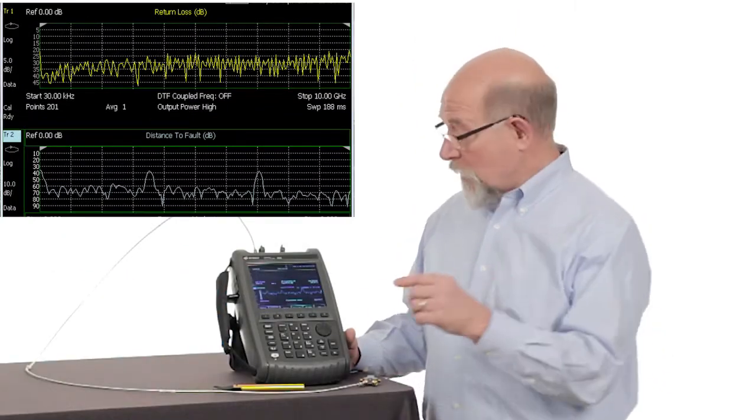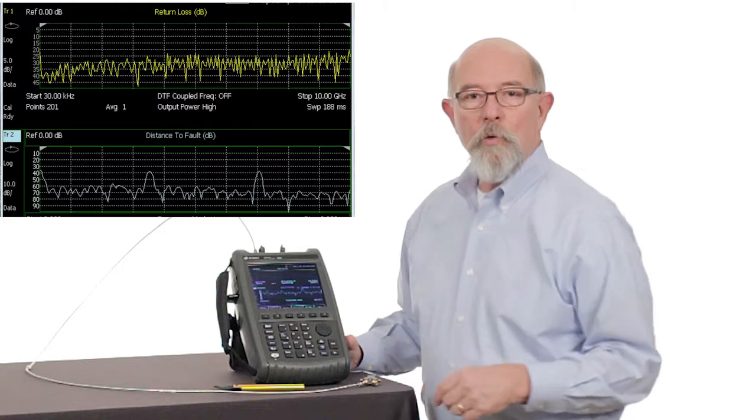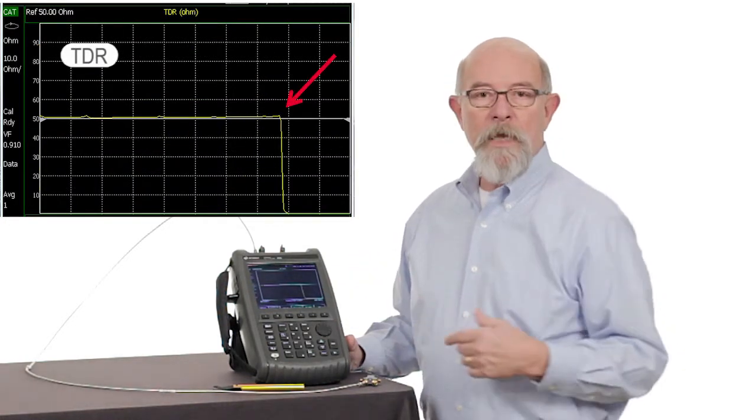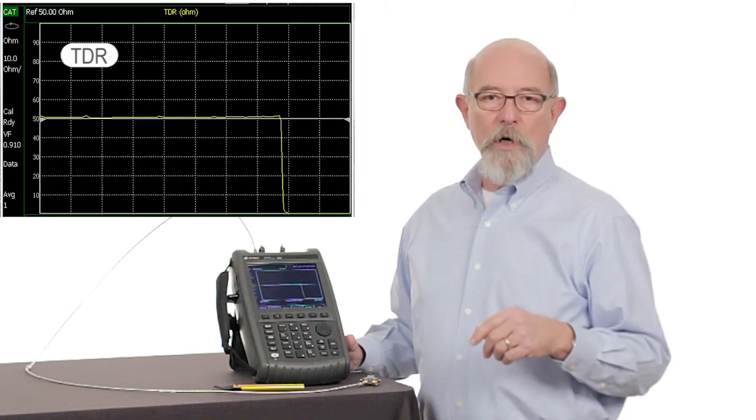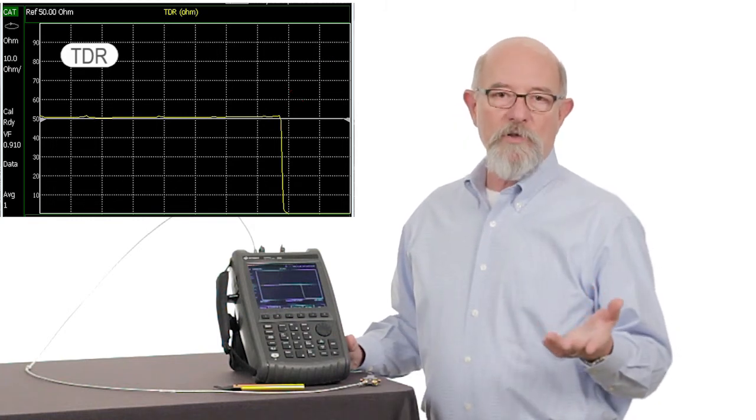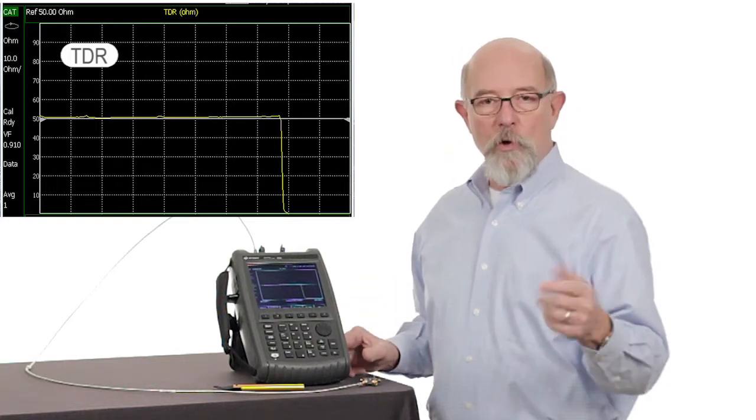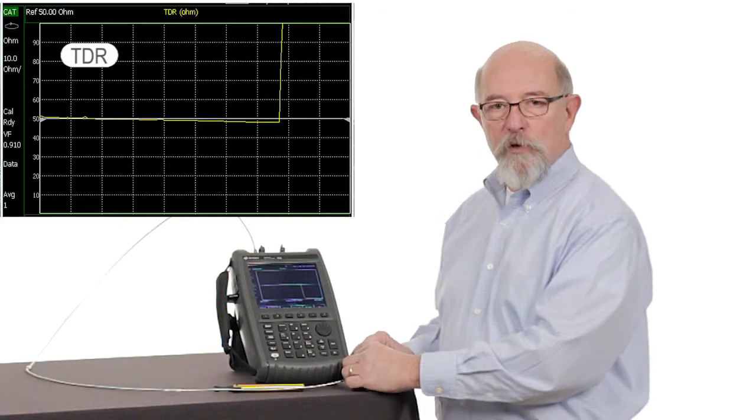By switching measurements to TDR, we can see that we have a good 50 ohm cable out to 2 meters. Then we see a short. After all, the short doesn't support voltage across its conductors, so by definition, it's 0 ohms. If we change the short to an open, the impedance moves to infinite.